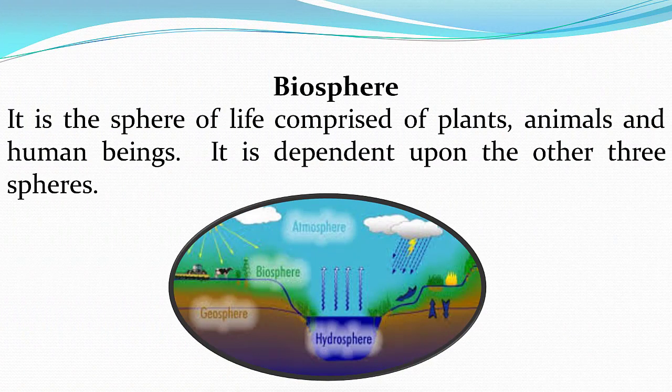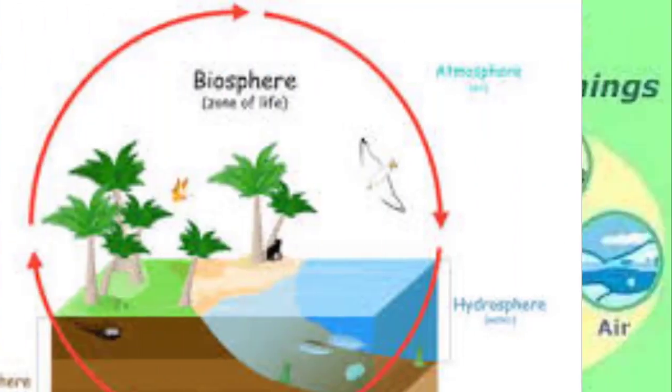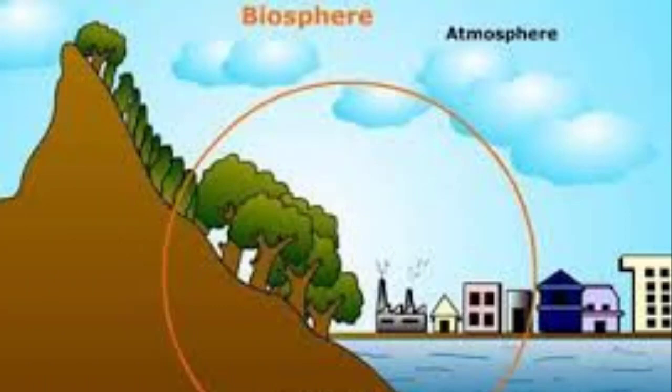Now we will discuss our next topic: biosphere. What is biosphere? Biosphere is the sphere of life comprised of plants, animals, and human beings. It is dependent upon the other three spheres. In simple words, the biosphere is defined as the area of the planet Earth where organisms live, including the ground and the air.